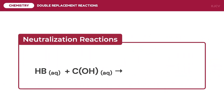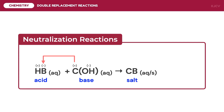Another double replacement reaction involves neutralizing reactants. We have the reaction between HB and COH, where HB is the acid and COH is the base. Neutralization reactions have these two substances as the reactants. Hydrogen is the acid's cation and ion B is the acid's anion; ion B may be a monoatomic or polyatomic anion. For the base, C is the cation — this may be a type 1 or type 2 metal or any polyatomic cation — and hydroxide is the anion. Ion C of the base will bond with ion B of the acid to form a salt product, which may be aqueous or solid depending on the solubility rules.